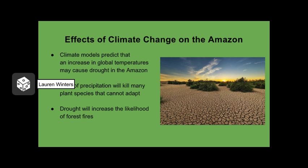Climate models are used by scientists to attempt to predict the effects that global warming may have on our planet. Many climate models have predicted that due to a rise in global temperatures, the Amazon may begin to experience severe drought. If this does occur, many plant species are predicted to die or possibly become extinct, as they will not be able to adapt to these harsh conditions. Drought will also increase the chances of wildfires breaking out, destroying more plant life.